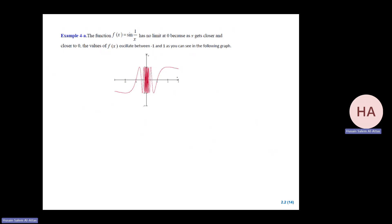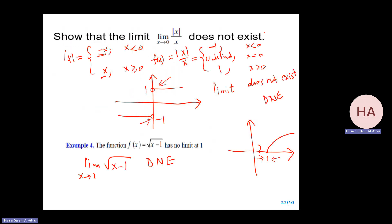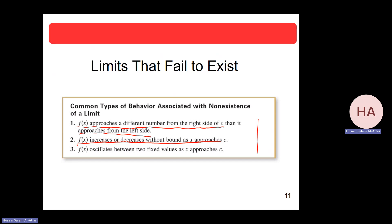The third case: like sin(1/x). The function will oscillate between -1 and 1 as x approaches zero. I cannot reach a specific number — it oscillates and takes all values between -1 and 1. So we say the limit does not exist. This is the third case where the limit fails to exist: f(x) oscillates between two fixed values as x approaches c.